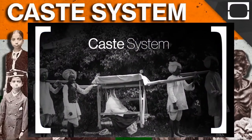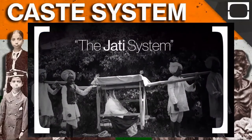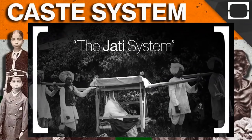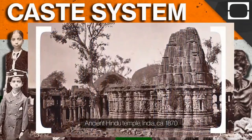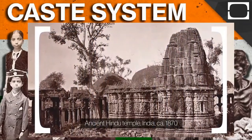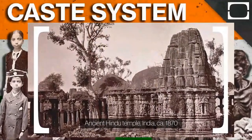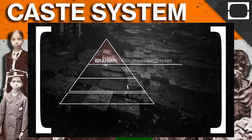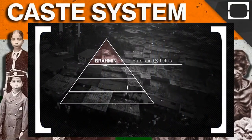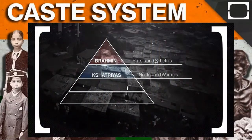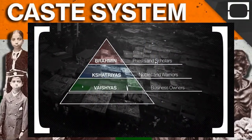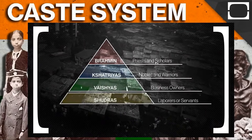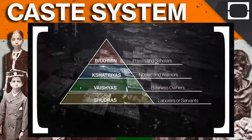The caste system is a hereditary social hierarchy, also called the Jati system, that's existed in India for nearly 2,000 years. Historians think that these social distinctions may be based in ancient Hinduism, which delineates four major social classes, or Varnas. On top are the Brahmin, usually described as priests and scholars. Then come the Kshatriya, described as nobles and warriors. The Vaisya, below them, operate commercial businesses. And then the Sudra, below them, are referred to as laborers or servants.